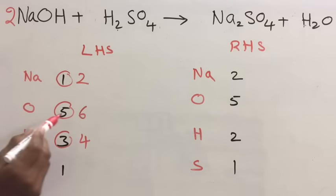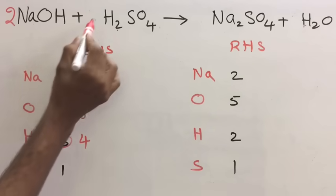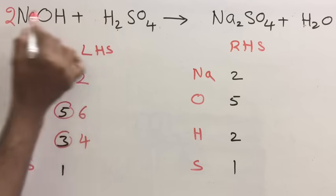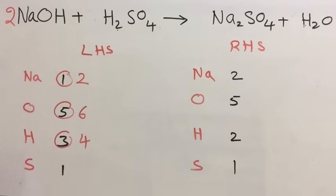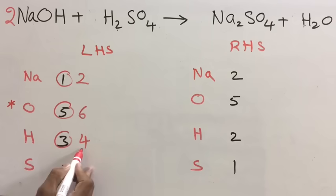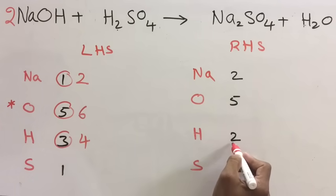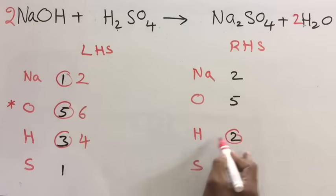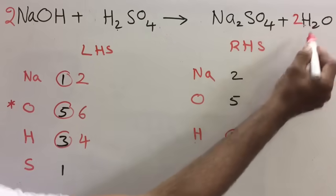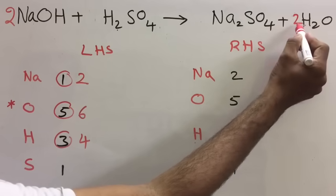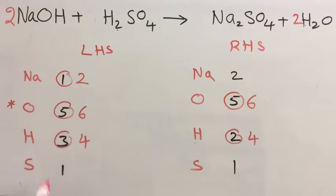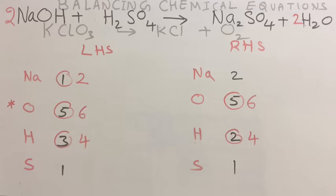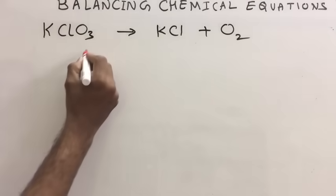Check oxygen: six on LHS, five on RHS — working with oxygen here looks very complicated, so check it at the end. Check hydrogen: four on LHS, two on RHS. We need two more hydrogen, so write two here — hydrogen becomes four, two and two. But oxygen also changes: two plus two plus four equals six. Now check: two, six, four, one on LHS equals two, six, four, one on RHS — the equation is balanced.